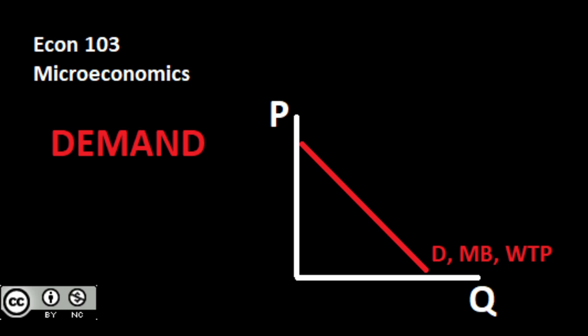To finish off, we're going to take a look at different measurements of sensitivity — how sensitive is our quantity demanded to a change in price. If price goes up by a dollar, how much does my quantity demanded change? We'll look at two measures of this sensitivity: first the marginal effect, and then we'll move on into elasticity. So let's jump into taking a look at our demand curve and its features.